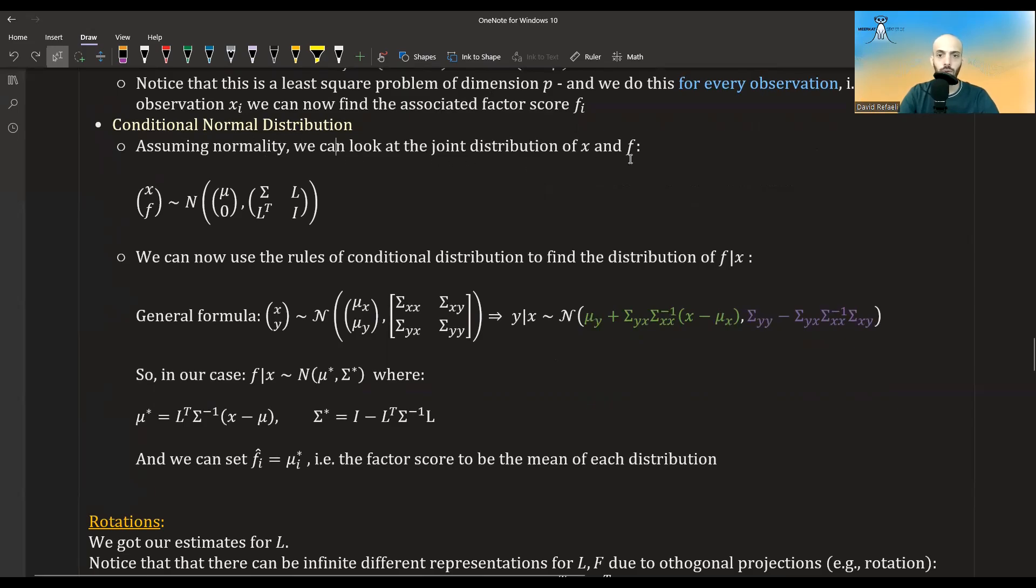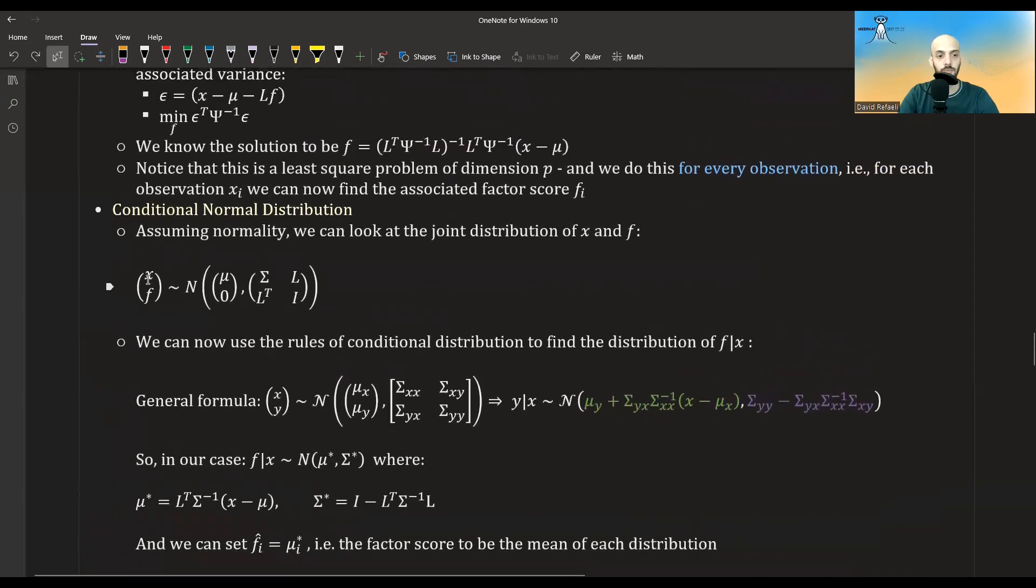Another way of finding the factor scores is to use conditional normal distribution. Again, we have to assume normality here. We can look at the joint distribution of x and f. So concatenate the x vector with the f vector. We assume they have a joint normal distribution, and basically that both of them distribute normal. We know the mean of x is mu. We know the mean of f is zero. We know the variance of x is sigma. We know that the variance of f is i. These are all our assumptions. Yeah. And this is we calculated given the assumptions. And we know that the covariance between x and f is L, as I've shown previously in this video.